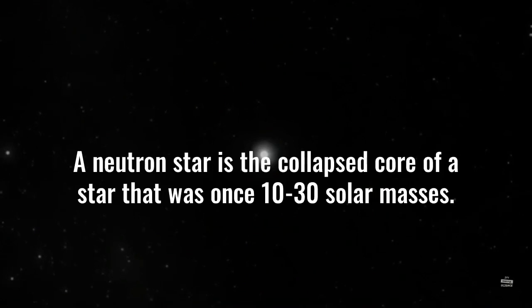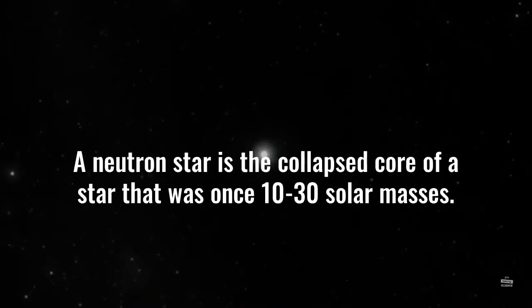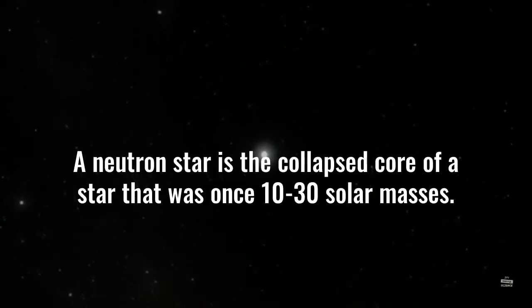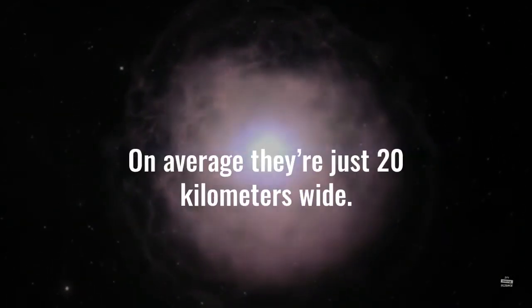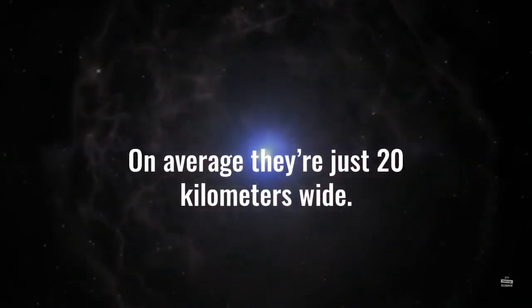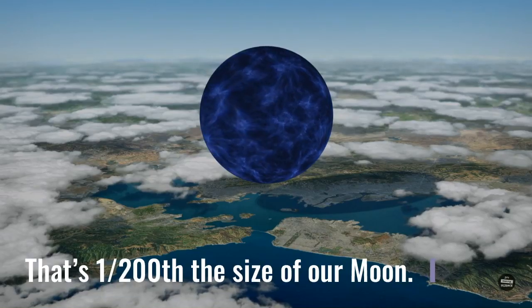A neutron star is the collapsed core of a star that was once 10 to 30 solar masses. They're the smallest stars in the universe, but they're also incredibly dense. On average, they're just 20 kilometers wide, or 1 two-hundredth the size of our moon.